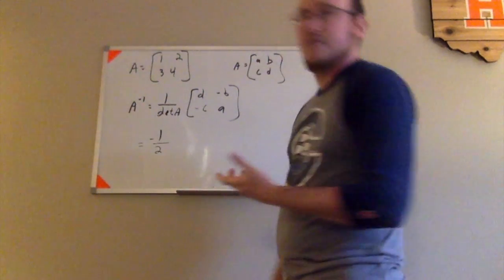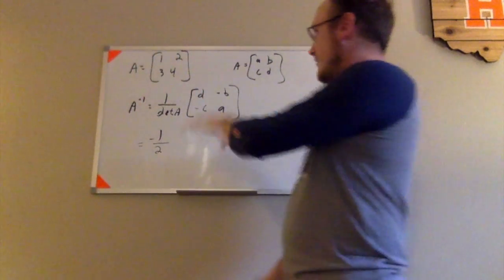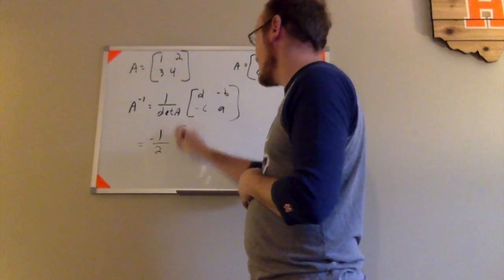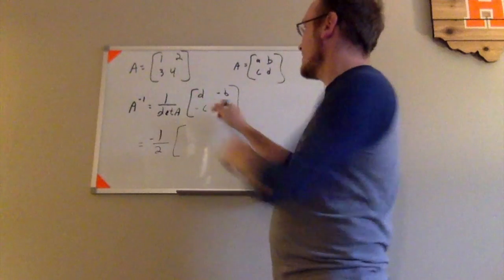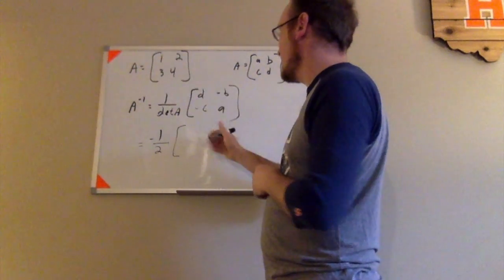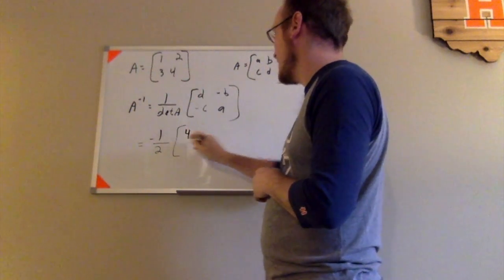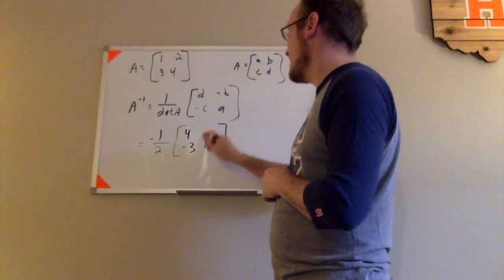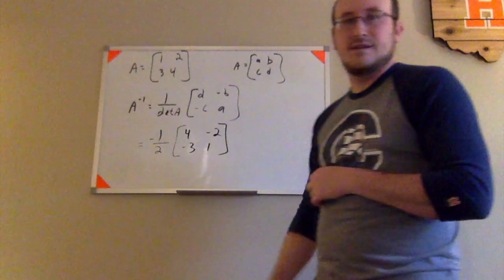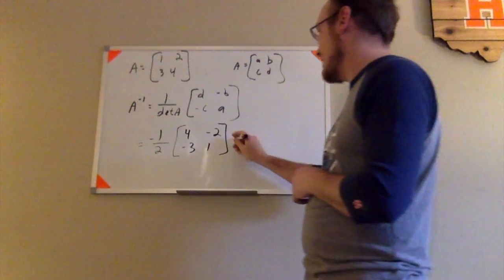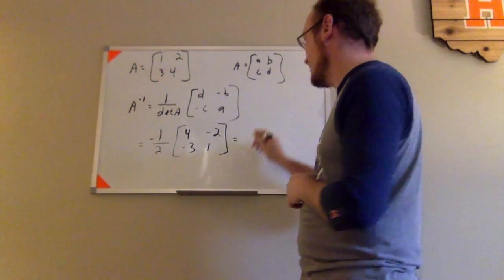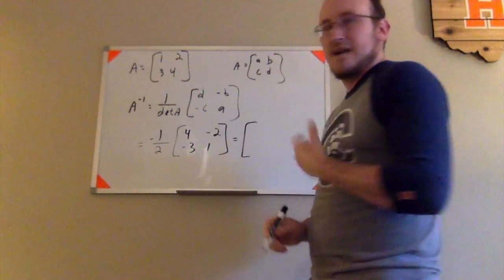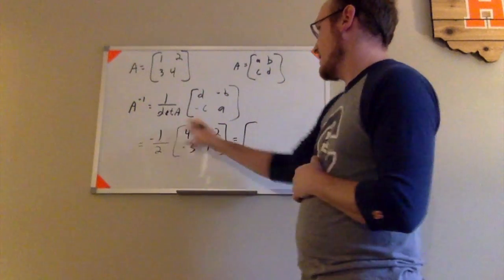I'm going to put the negative just out in front of that. So I have negative 1 half times some new matrix. That new matrix is supposed to switch the entries on this diagonal, so the 4 will be here and the 1 will be there, and it will change the sign of that to negative 3 and the sign of that to negative 2.